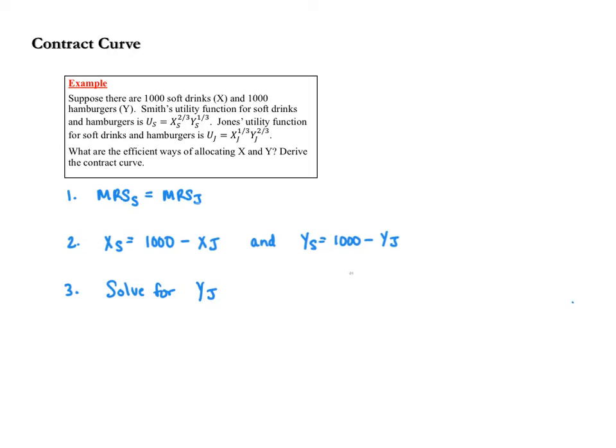The example reads: suppose there are 1,000 soft drinks and 1,000 hamburgers. Smith's utility function for soft drinks and hamburgers is one Cobb-Douglas utility function, and Jones' utility function for soft drinks and hamburgers is another example of a Cobb-Douglas utility function.